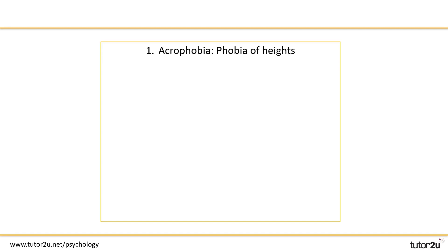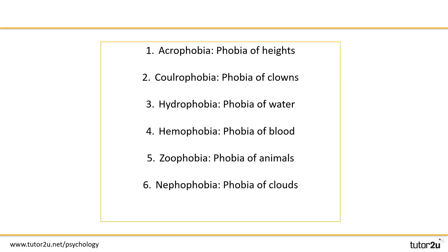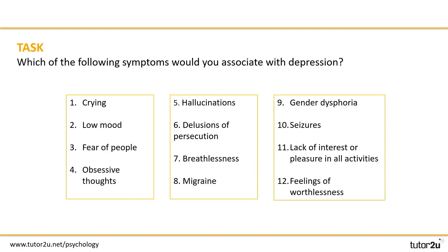And here are our answers. Acrophobia is the phobia of heights; coulrophobia, the phobia of clowns; hydrophobia, the phobia of water; haemophobia, the phobia of blood; zoophobia, phobia of animals; nephophobia, the phobia of clouds; and cryophobia, the phobia of ice or cold. You don't have to know any specific phobias for your exam, although knowing one or two will make it easier when you're looking for examples to describe why and how phobias actually develop.